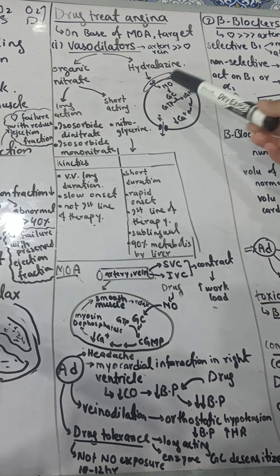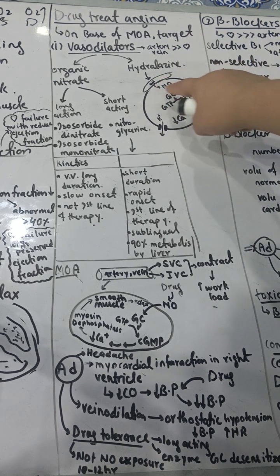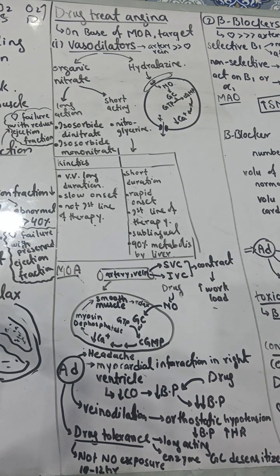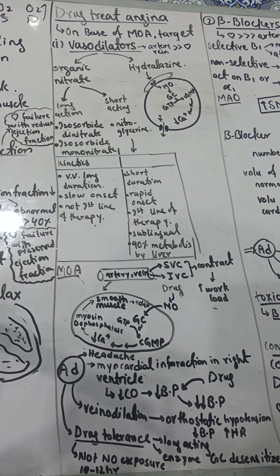The second class of vasodilators is hydralazine. Its mechanism is that the epithelium of the smooth muscle cell releases nitric oxide. Naturally, the endothelium of smooth muscles releases nitric oxide, but in angina patients the endothelium does not release it. Hydralazine induces the endothelium to release nitric oxide — it does not release NO by itself but allows the endothelium to do that work. This is the mechanism of hydralazine.